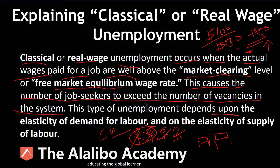This type of unemployment depends upon the elasticity of demand for labor and the elasticity of supply of labor. The change in demand is significant and impacts the number of people seeking those positions, leading to unemployment because not all seekers can get the positions. Demand is high but supply remains constant — and that is classical, or real wage, unemployment.